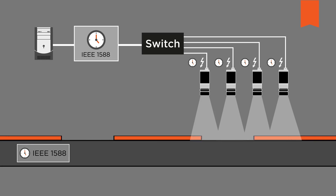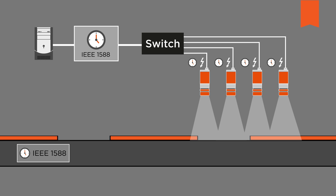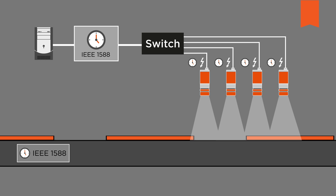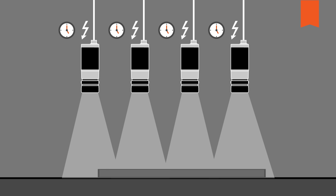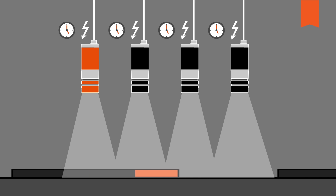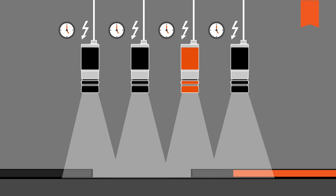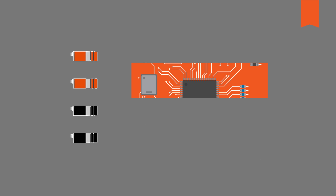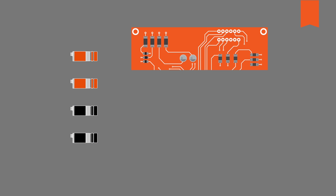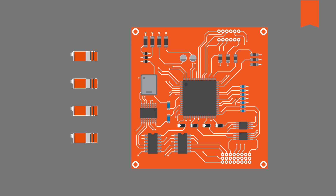A common example from the machine vision world using scheduled action commands is semiconductor inspection. Semiconductors are transported on a conveyor belt at a uniform speed and pass below a series of four cameras installed for inspection purposes. These cameras are positioned directly next to one another and vertically to the conveyor belt. Each camera captures an image at the same precise moment as the semiconductor passes below its location. Since the individual images will then be merged into one single image, it is important that the cameras acquire the image at precisely the same moment — down to microseconds.